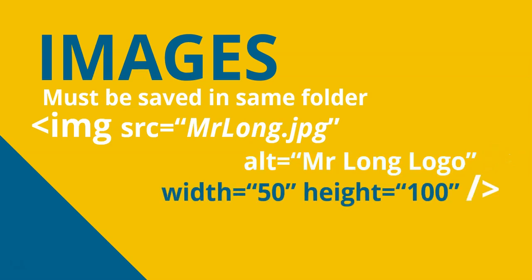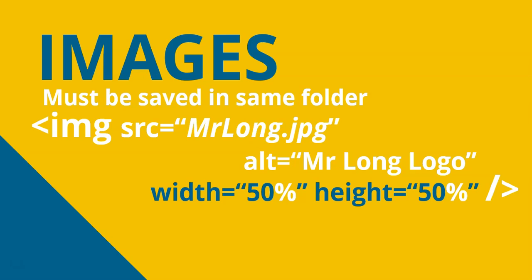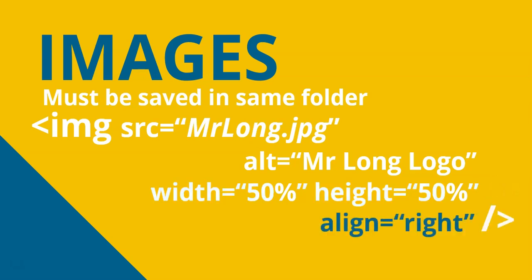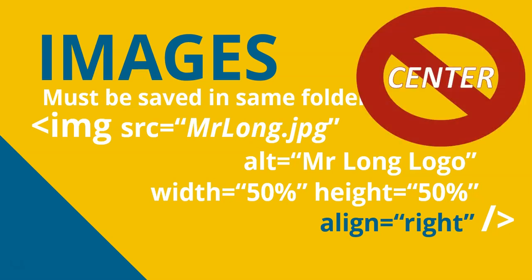Other attributes you can use include width and height. If you set both, you'll probably distort the image unless you keep the correct ratio, so I recommend only changing one — either height or width — to keep it in proportion. You can also use percentages instead of fixed values, which will scale relative to the page size. The last attribute is align: aligning to the right puts text on the left, and aligning to the left puts text on the right. Note there is no center option for the align attribute.